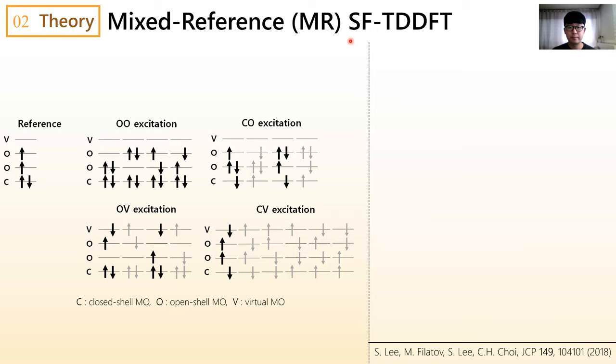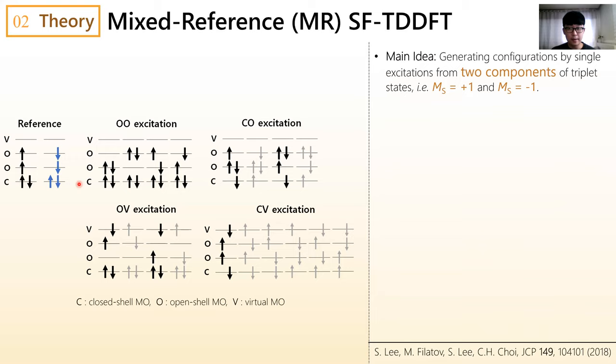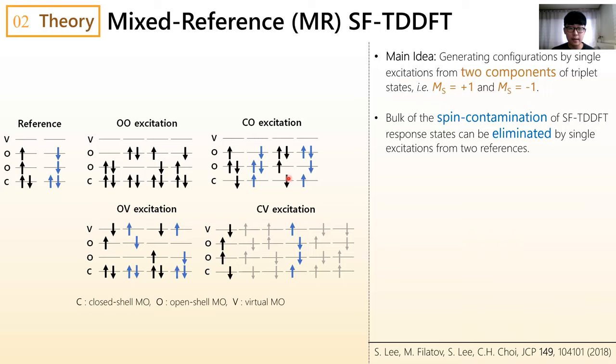A main idea of mixed reference spin-flip TDDFT is generating configurations by single excitation from not only the M_S = +1 reference, but also the M_S = -1 reference. A single beta to alpha excitation from the M_S = +1 reference generates some important set of missing configurations in spin-flip TDDFT, represented with blue arrows. Therefore, the spin-adapted configurations can be obtained for CO and OV types of configurations.